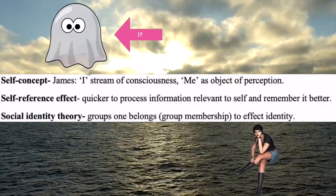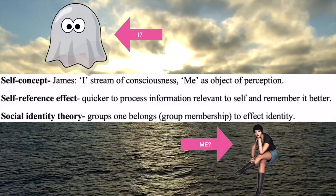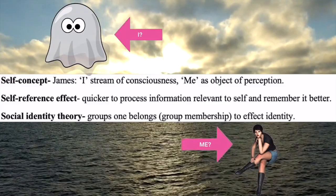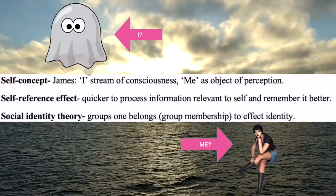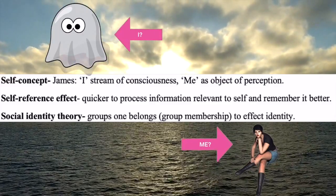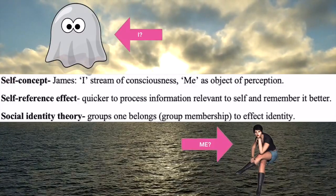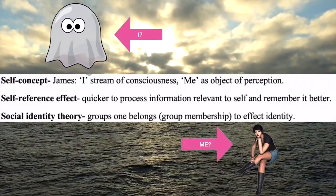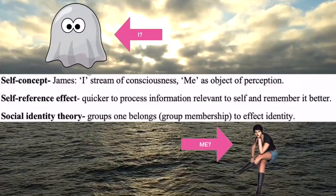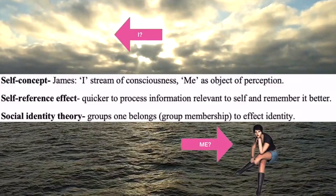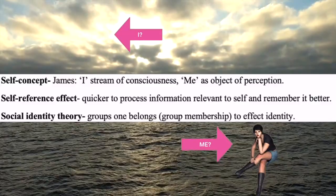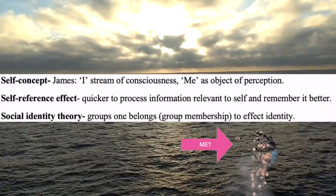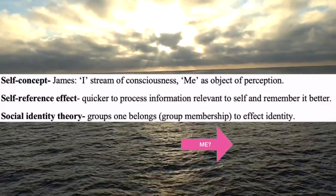James proposed, according to his self-concept theory, that individuals have two perceptions of the self. They include the I — the stream of consciousness — and the Me as an object of perception. The I is our core self: what we desire, what we want, our memories, consciousness, perception, and so on. While the Me we see as an object — something existing in reality and interacting with other people, groups, society, etc.